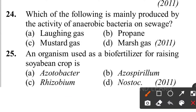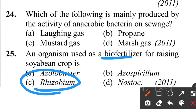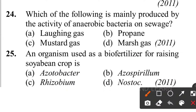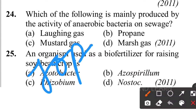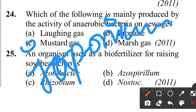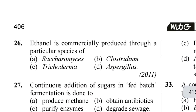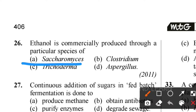Twenty-fifth question: an organism used as a bio-fertilizer for raising soybean crop. The answer is Rhizobium japonicum. It is a type of symbiotic association with leguminous plant roots, which increases the soybean crop yield. Twenty-sixth question: ethanol is commercially produced by which species? Option A - Saccharomyces - very easy question.